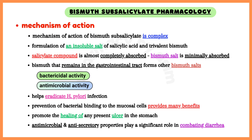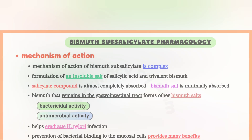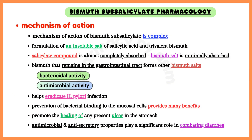The bismuth that remains in the gastrointestinal tract forms other bismuth salts. These bismuth salts contain bactericidal and antimicrobial activity and prevent bacteria from binding and growing on the mucosal cells of the stomach, helping to eradicate Helicobacter pylori. Furthermore, the prevention of bacterial binding to the mucosal cells provides many benefits, including preventing intestinal secretion, promoting fluid absorption, reducing inflammation, and promoting the healing of any present ulcer in the stomach.